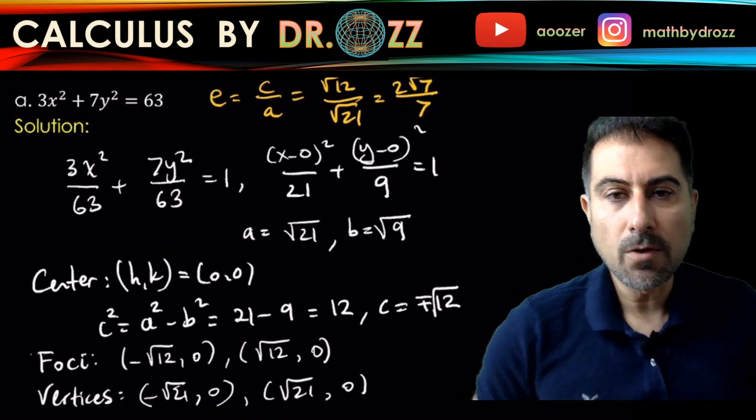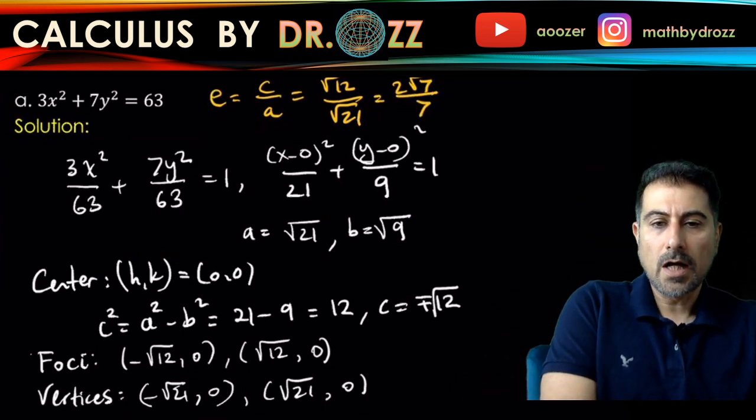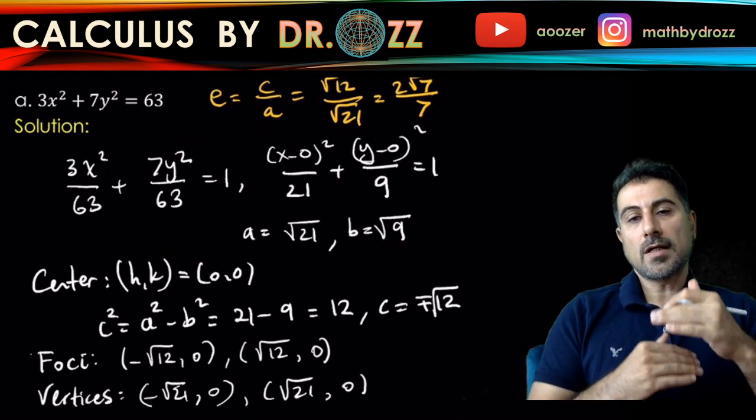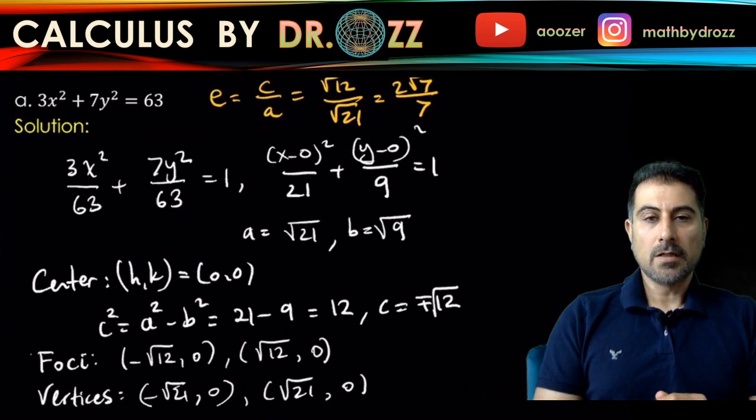Okay. I think we got all the information about the ellipse, including the center, foci, vertices, and eccentricity. Eccentricity is just telling us, like, how flat the ellipse is. Okay. The closer it's to 1, it's more flat.